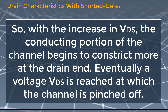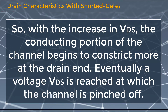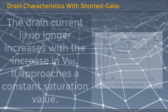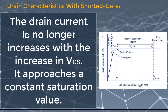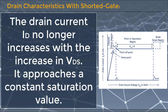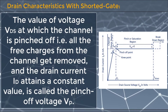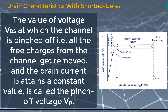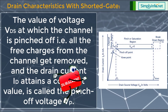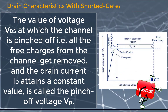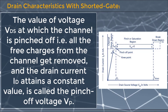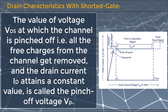Eventually, a voltage VDS is reached at which the channel is pinched off. The drain current ID no longer increases with the increase in VDS — it approaches a constant saturation value. All the free charges from the channel get removed and the drain current ID attains a constant value. This voltage is called the pinch-off voltage VP.